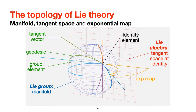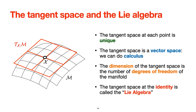The tangent space is a linear space tangent to the manifold. Because the manifold is smooth, this tangent space is unique. It is a vector space, so we can use calculus on it. The dimension of this vector space equals the degrees of freedom of the manifold, and the tangent space at the identity is called the Lie algebra.